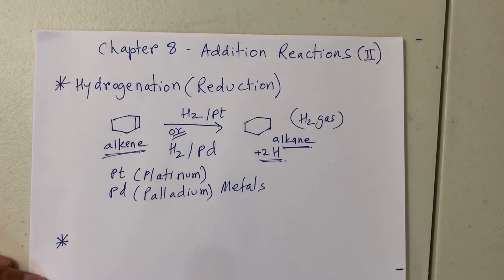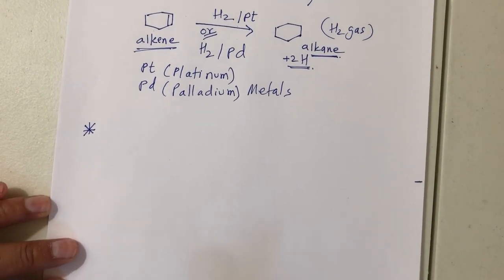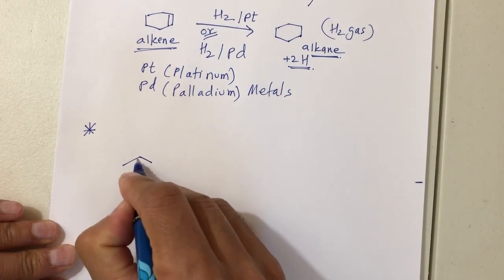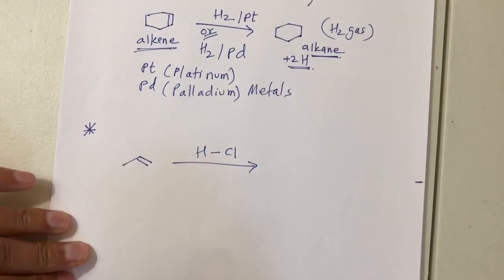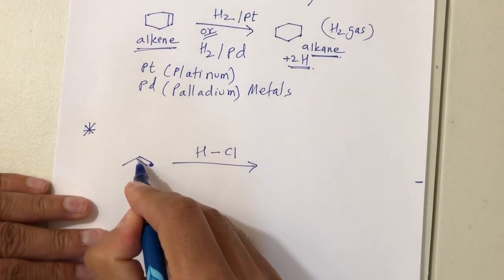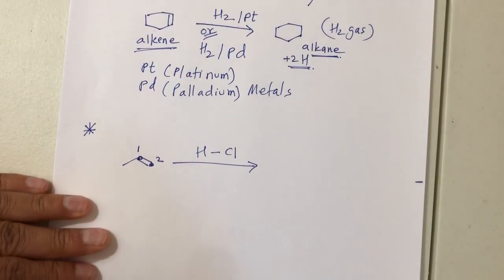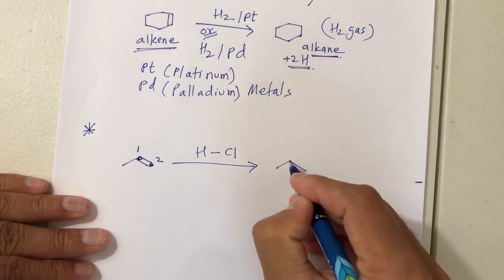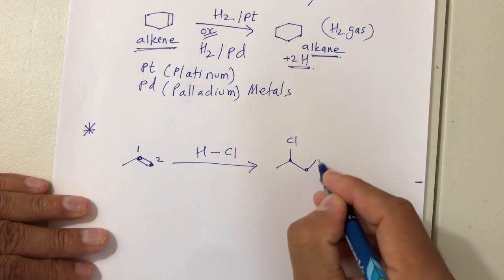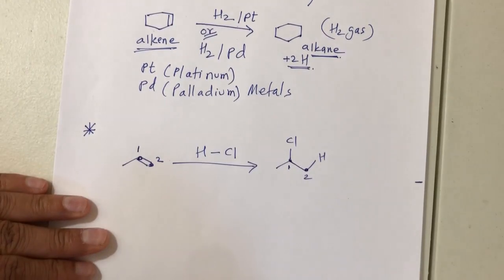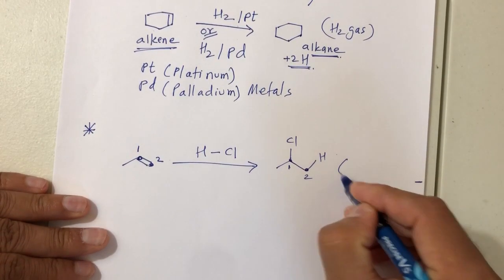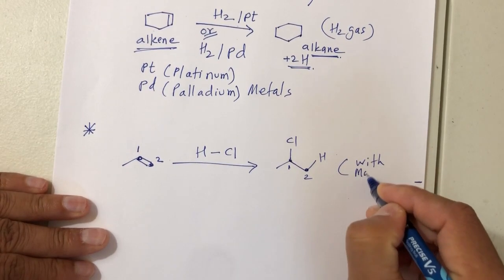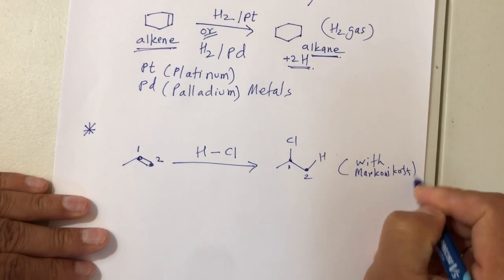The second reaction is similar to what we looked at before. If you have a double bond and throw HCl at it, H will go on carbon 2 and Cl will go on carbon 1. We've looked at this mechanism in detail — this reaction follows Markovnikov's rule because carbon 1 and carbon 2 are two different carbons.